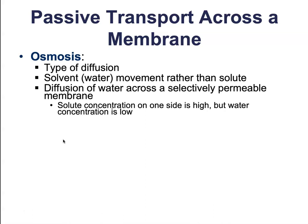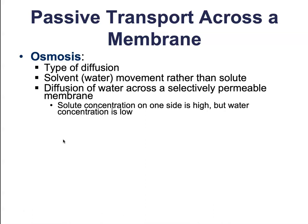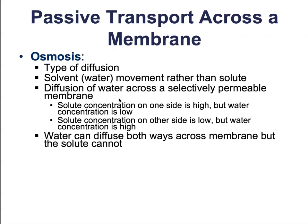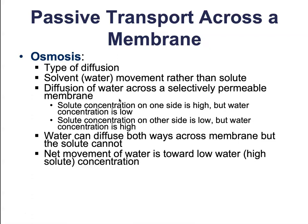Semi-permeable membranes allow some but not all molecules to flow freely across. In this case, semi-permeability refers to the ability of water to move but not the solute. So on one side of the membrane the solute concentration is high and water concentration is low, while on the other side the solute concentration is low but the water concentration is high. Water can move both ways, but the solute cannot. The net movement of water is going to be toward the side with low water and high solute concentration. We refer to this as osmotic pressure — the pressure that develops due to osmosis.